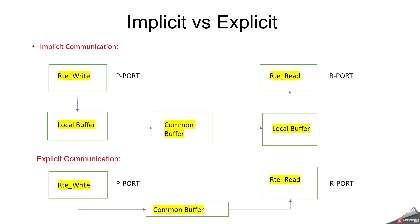In implicit communication, we use the local buffer to exchange data. Data written by a runnable entity is available to other runnable entities only after runnable termination. Several read accesses always deliver the same data value during runnable execution, because during read time you always read the data from the common buffer. The implicit API uses a locally cached copy of data to preserve consistency over a calling runnable entity invocation. Data is read into a global cache before the runnable entity starts executing and is read from the global cache after the runnable entity terminates. Data writes are done once, no matter how many times it is written.